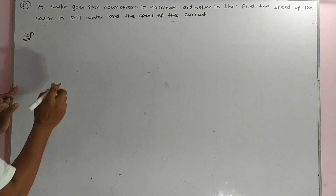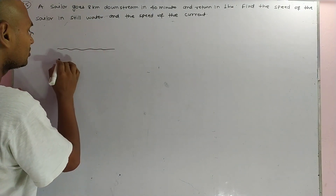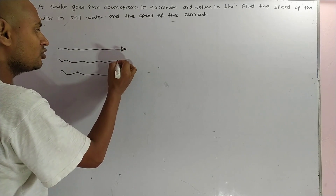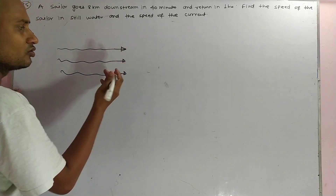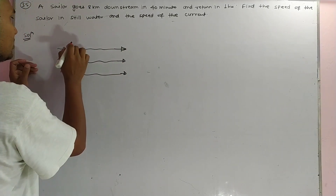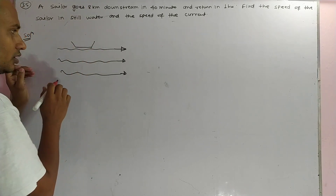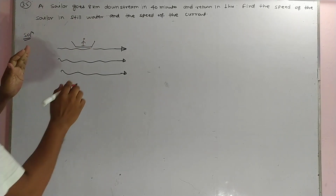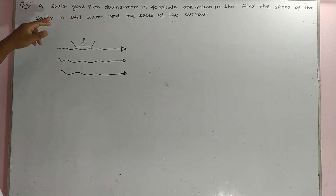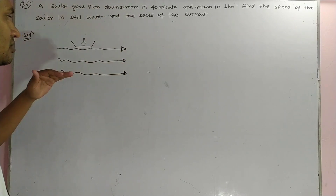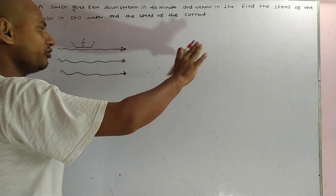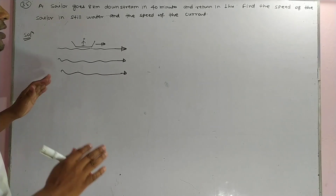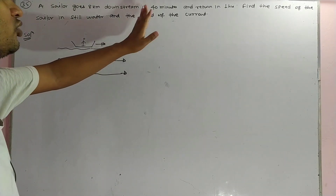Suppose there is a stream, and the direction of the stream is in this direction. There is a sailor who sails their boat. The sailor goes 8 kilometers downstream — downstream means in the direction of the stream — and it takes 40 minutes in the downstream direction.